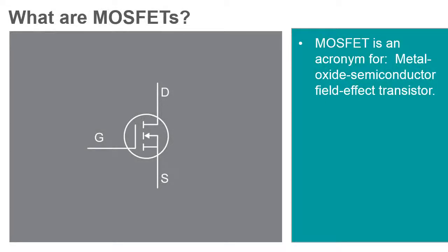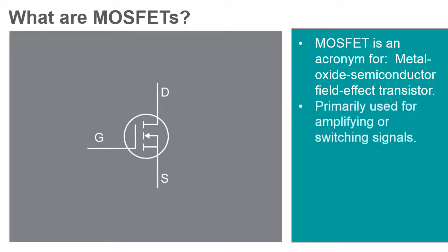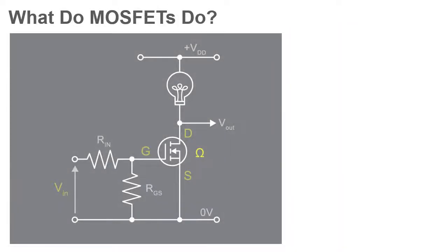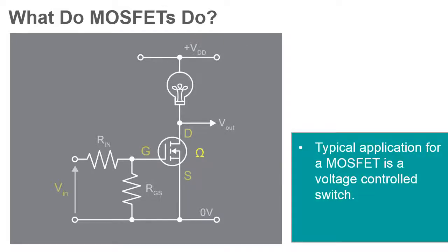MOSFET is an acronym for Metal Oxide Semiconductor Field Effect Transistor. A MOSFET is a type of transistor used primarily for amplifying or switching signals. MOSFETs today perform pretty much the same function as bipolar junction transistors, except BJTs are current-controlled devices and MOSFETs are voltage-controlled. The most typical application for a MOSFET is a voltage-controlled switch.